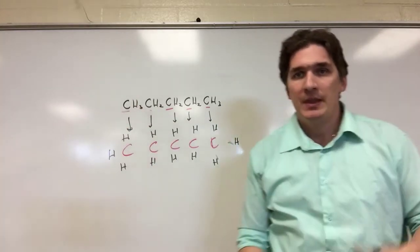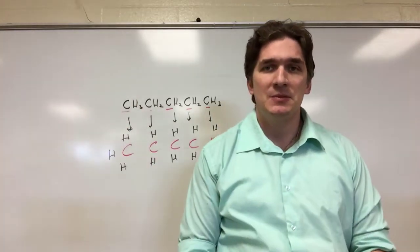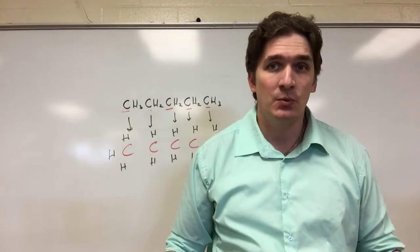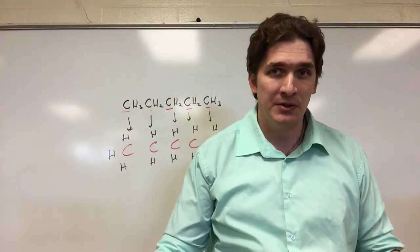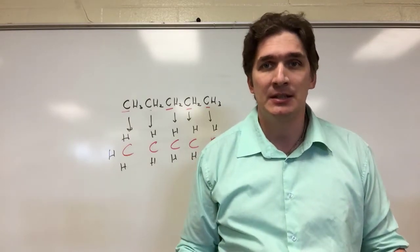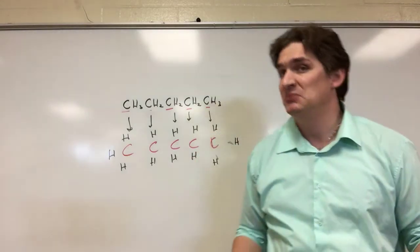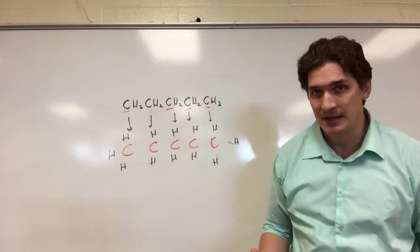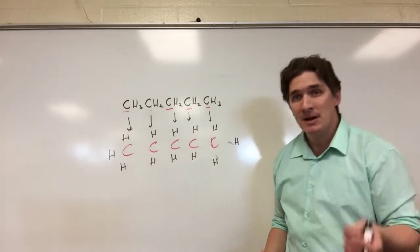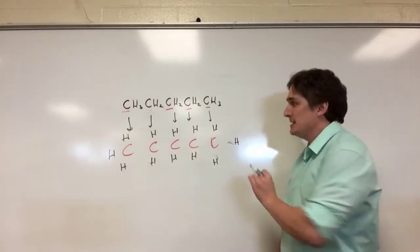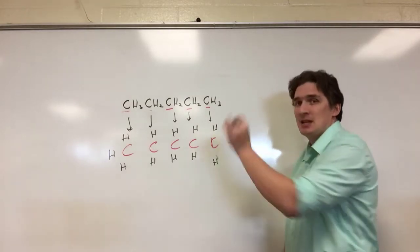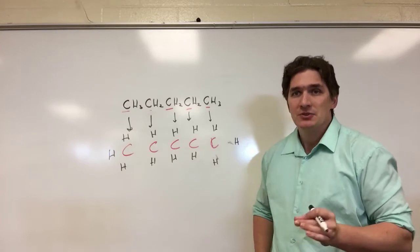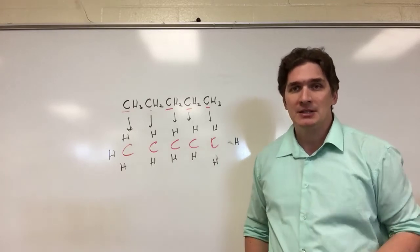So this is the spatial arrangement as a first guess. We still need to draw the Lewis structures to actually get things like tetrahedral, trigonal planar, and so on. But as a first pass, it tells us how the molecule is arranged. So how do we actually connect them?